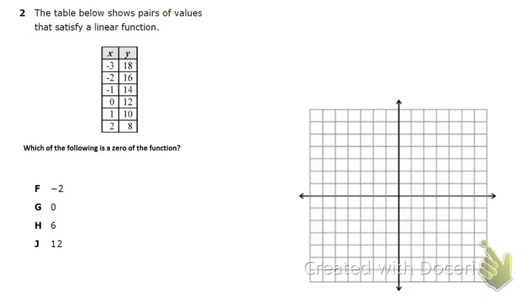Okay. They give us a table of values. And it says, which is a zero of a function? Well, I want us to know this terminology. A zero is an x-intercept. It's another term for x-intercept. So we have so many ways that we could do this problem. But first, I'm just going to talk about one little misconception that will probably trick a lot of you. An x-intercept is the value of x when y is 0.